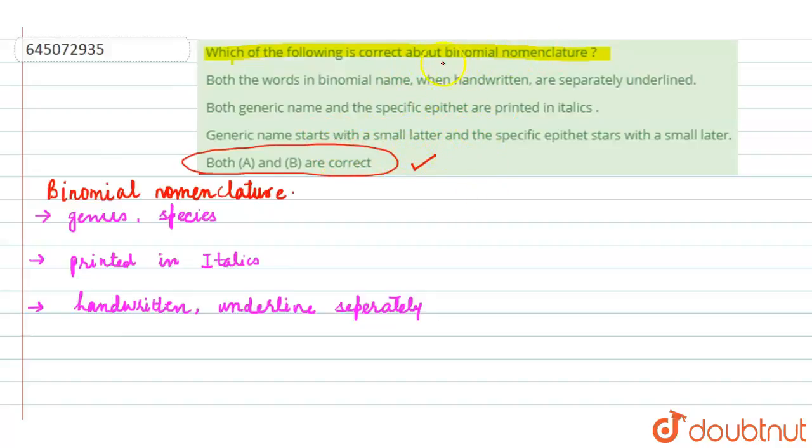So we found the correct option with respect to binomial nomenclature: the words in binomial name, when handwritten, are separately underlined, and both generic name and specific epithet are printed in italics. So this is all for this question. Hope you have understood it well.